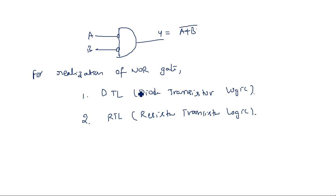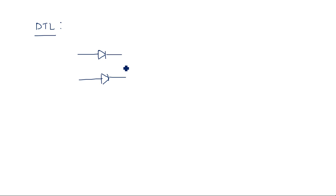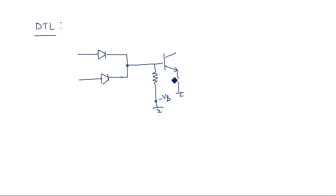Let us see DTL and RTL one by one. First, Diode Transistor Logic realization: we will be having diodes along with a resistor, and the output of these two diodes is connected to the transistor. Here we have minus VB. Sometimes you can also apply minus VB or it can be grounded. Here we have a collector resistor, the output Y, and plus VCC.